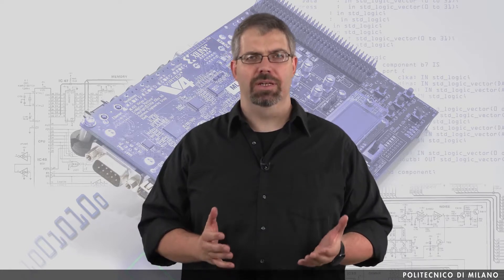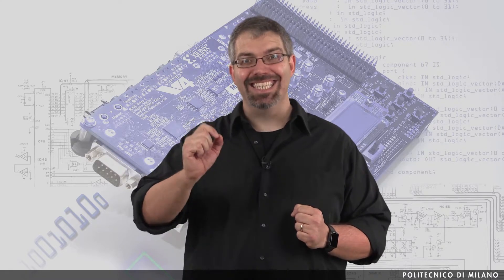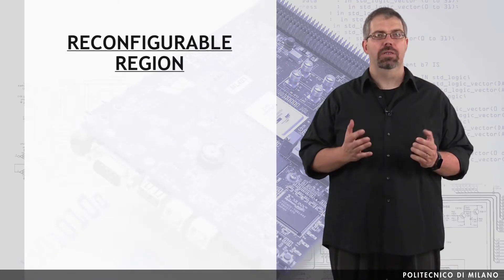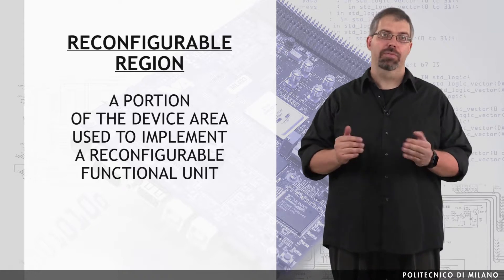Now we need one more definition, which is obviously related to the one we have just seen. We know that we can work with IP cores that can be swapped in and out of a running system, and these elements are called reconfigurable functional units. But one thing which is missing is the definition of where these units will be placed — and that is exactly what a reconfigurable region is. A reconfigurable region is a portion of the device area used to implement a reconfigurable functional unit.